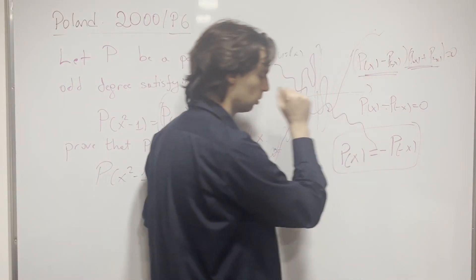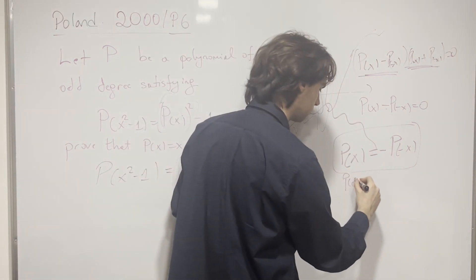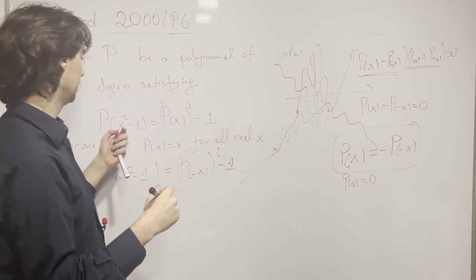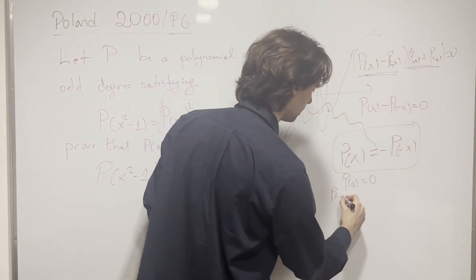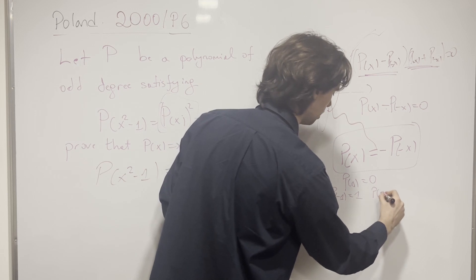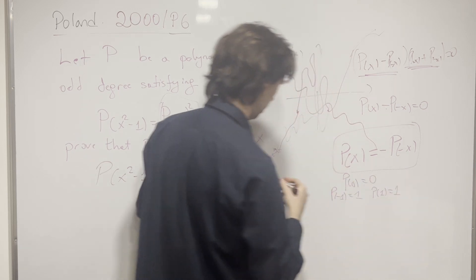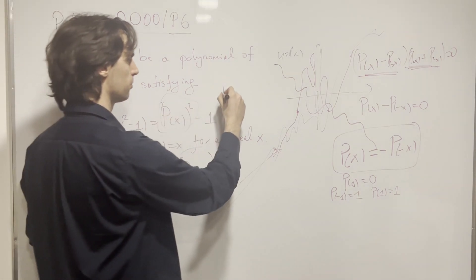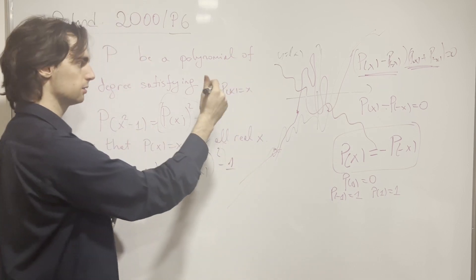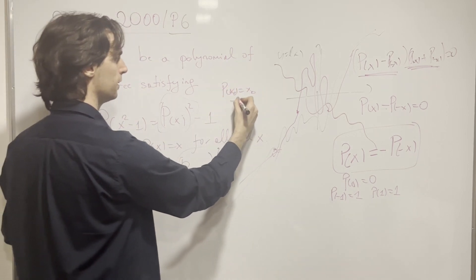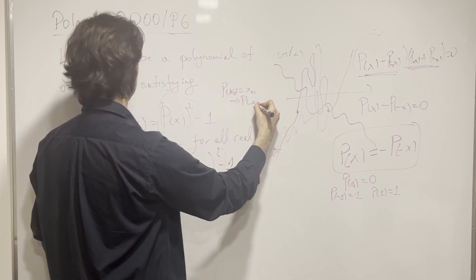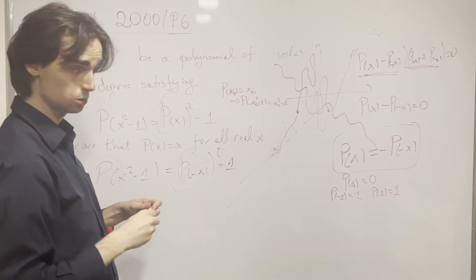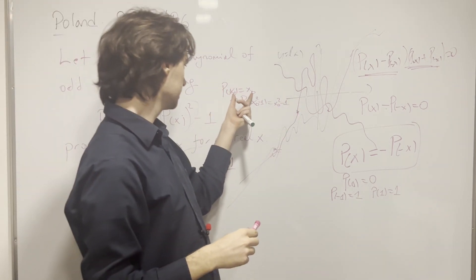So now we have that P is an odd function. This gives us P(0) equals 0, P(negative 1) equals negative 1, and P(1) equals 1. Furthermore, if P(x₀) equals x₀ for some x₀, then P(x₀ squared minus 1) equals x₀ squared minus 1 — that follows directly from the functional equation.